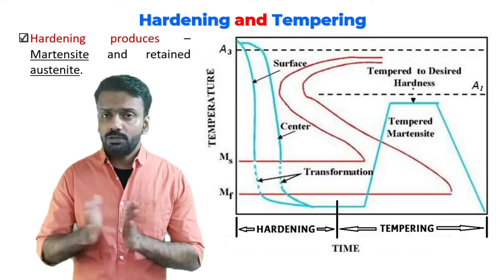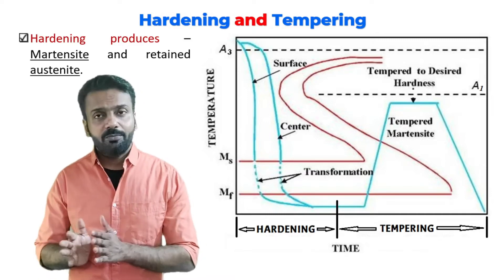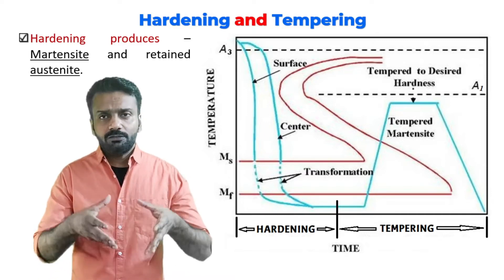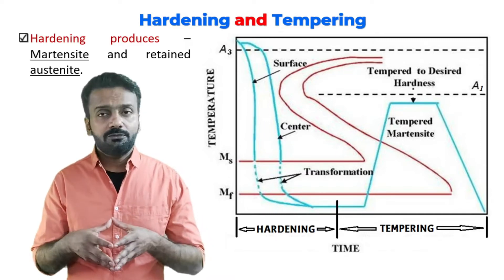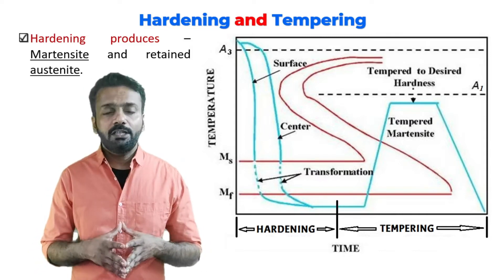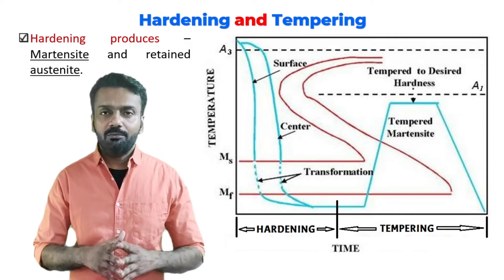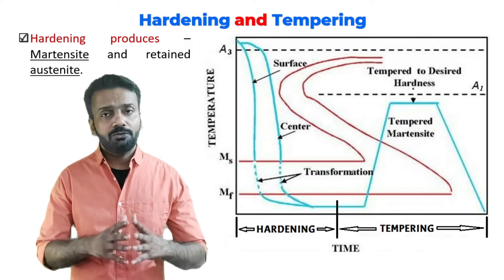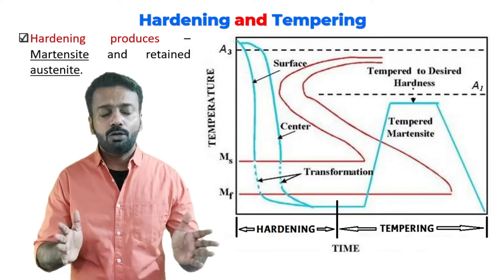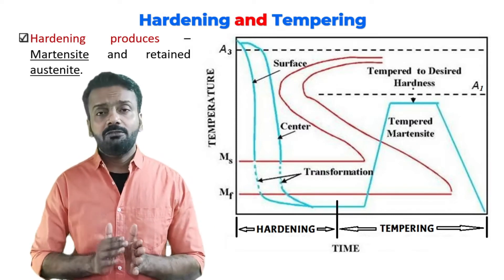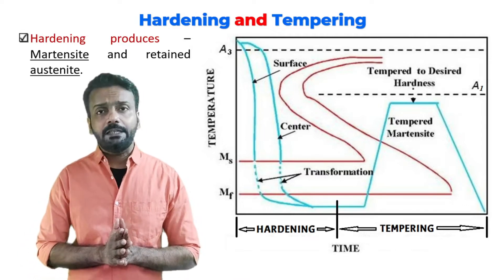That is why hardening is most of the time followed by tempering heat treatment. When the outer surface and inner surface have different cooling rates, the properties will differ. There will be a temperature gradient which can produce cracks in the material, so we follow it with tempering heat treatment.